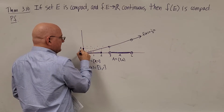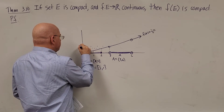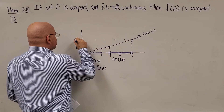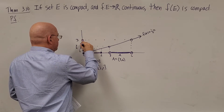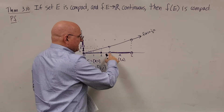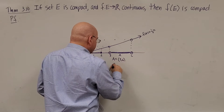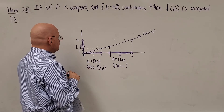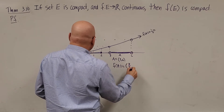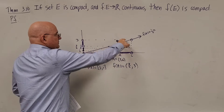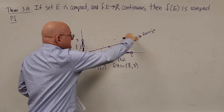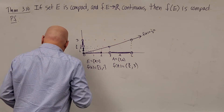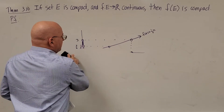So F(E) is going to go from 3/2 up to, but not including, 3 — that is, ½ of 3 to ½ of 6. Notice that F(E) is bounded but not closed, so it's not compact. This illustrates that on a continuous function, if we start with a compact set in the domain, the image is also compact, but starting with a non-compact set need not give a compact image.